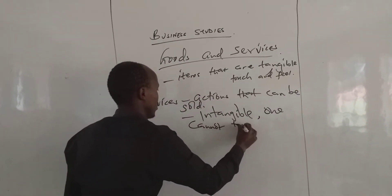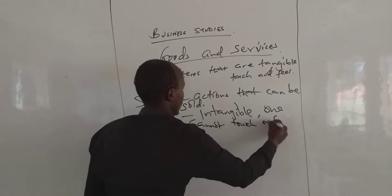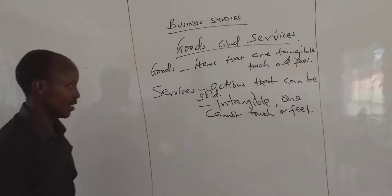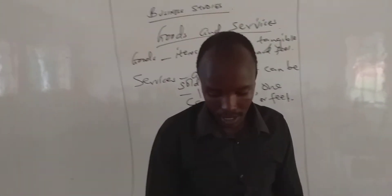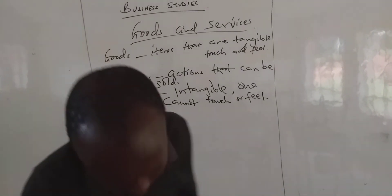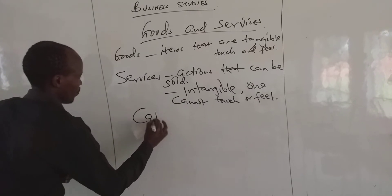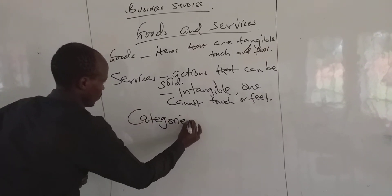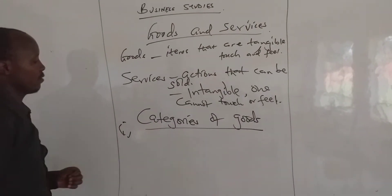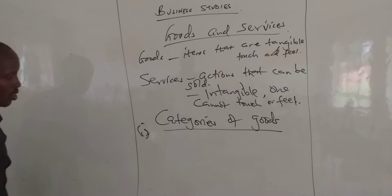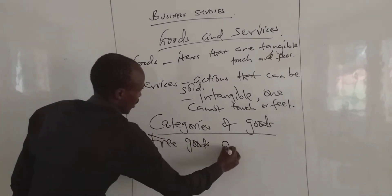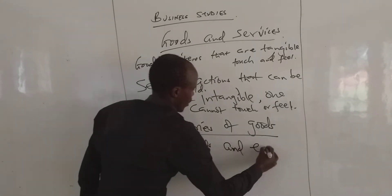Let us look at categories of goods — how goods are being categorized. Number one, there are several classifications of goods. The first category is free goods and economic goods.